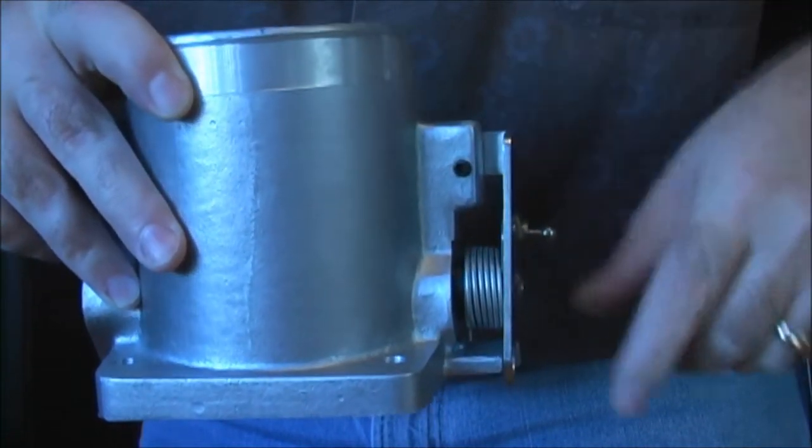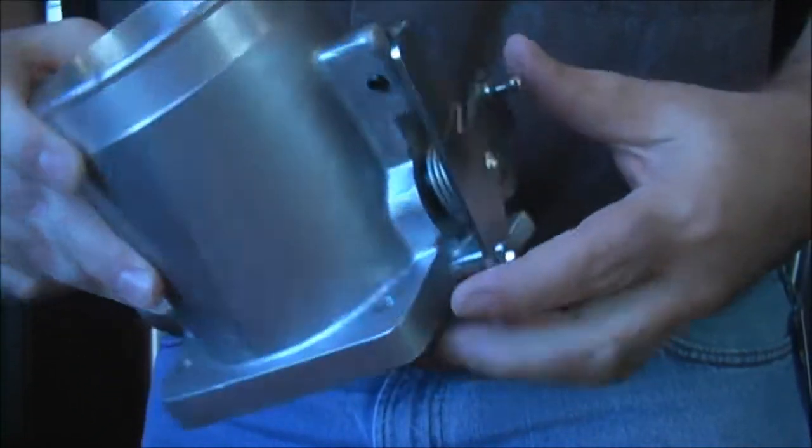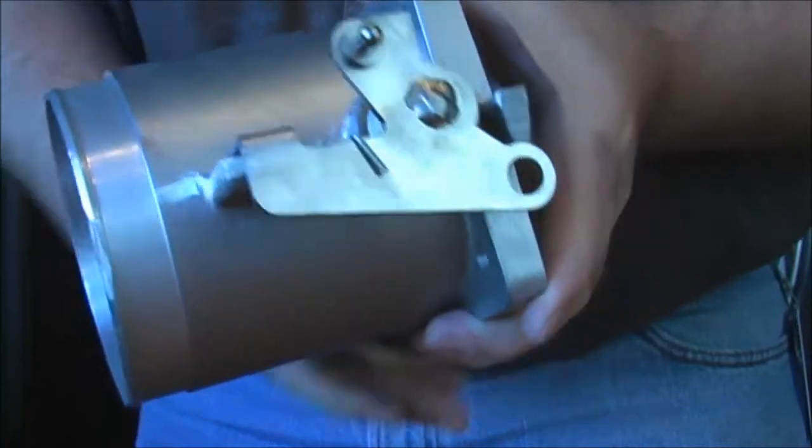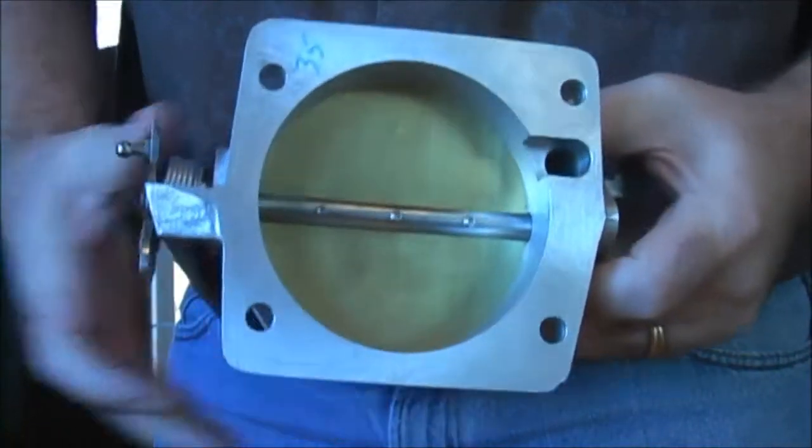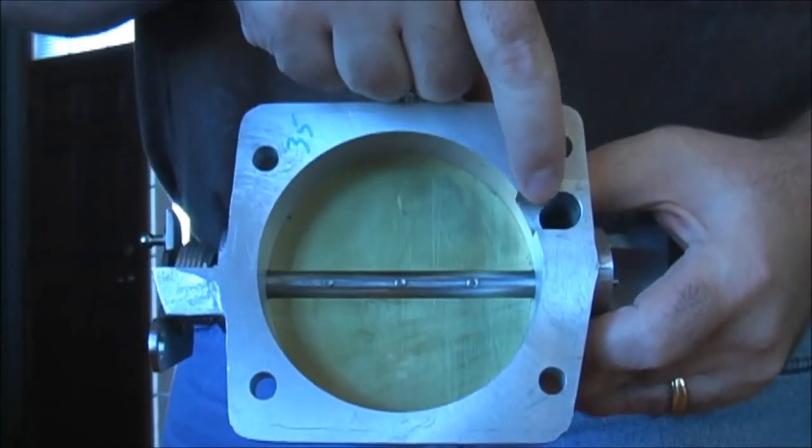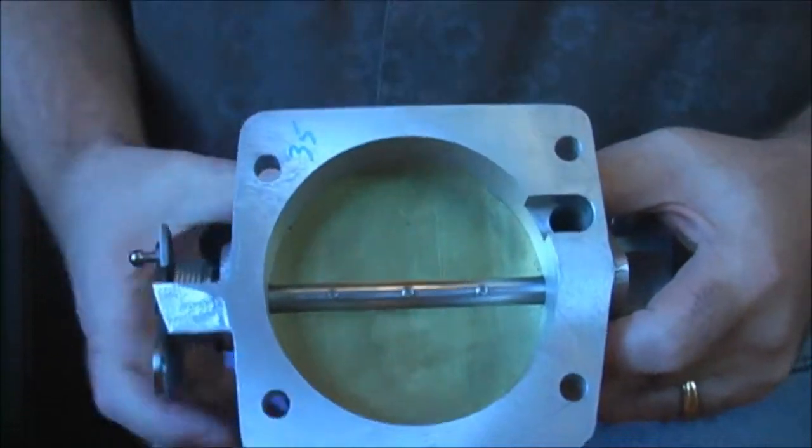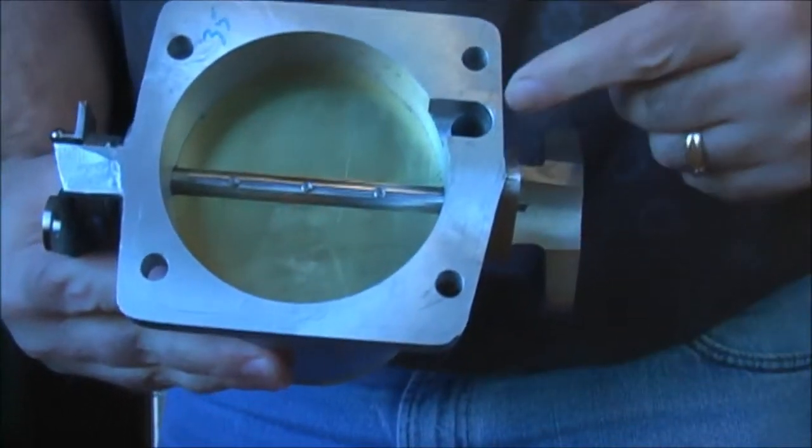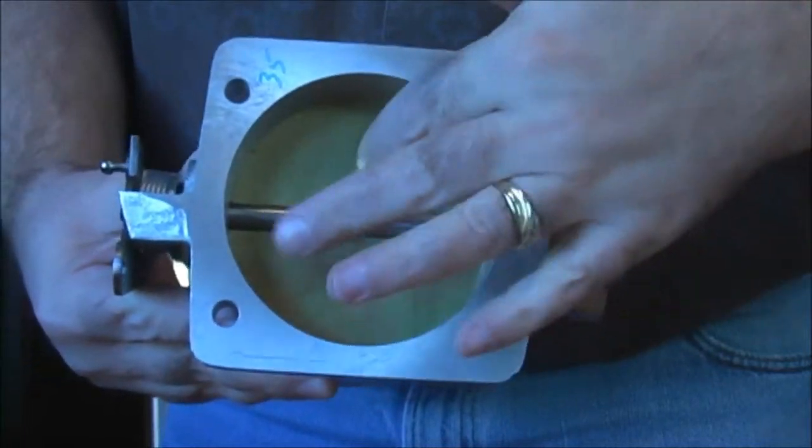Here you can see this is the bypass air hole. So when the air bypass is operating, this is where the air is coming from to get by the throttle plate there.